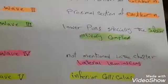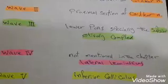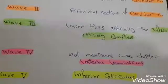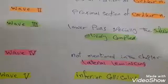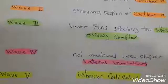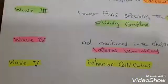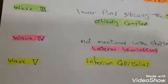Wave 4 is not mentioned in the chapter about auditory monitoring, but according to other books it is the lateral lemniscus. Wave 5 is generated from the inferior colliculus.